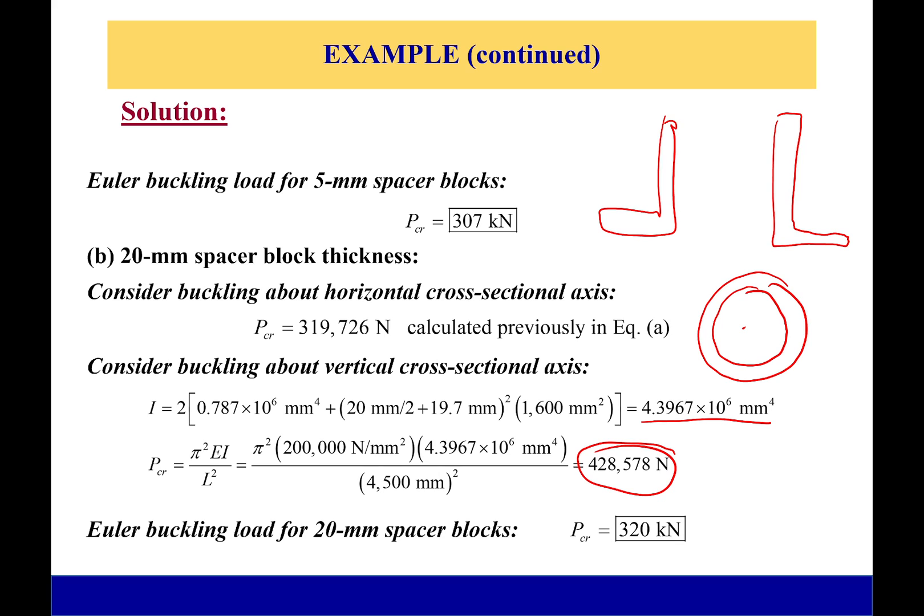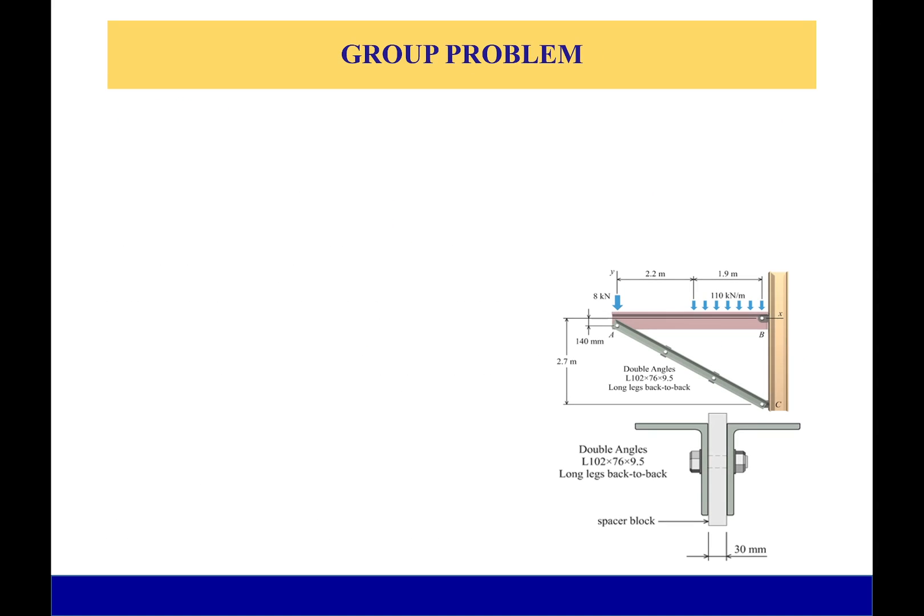Okay, so the Euler buckling load for the 20-millimeter spacer block is going to be 320 kilonewtons, because that is the minimum. The horizontal axis is the one that fails first for 20, and the vertical axis is the one that fails first for 5. So there is one of those problems where we have to check both. I think that's it. I'll see you all next time. Have a good one, bye-bye.